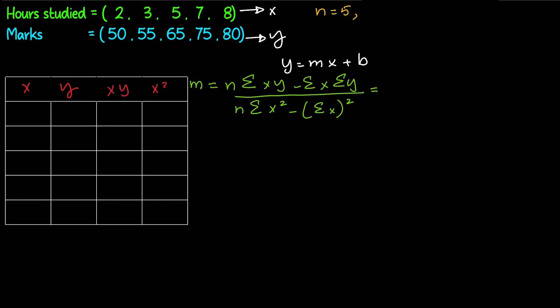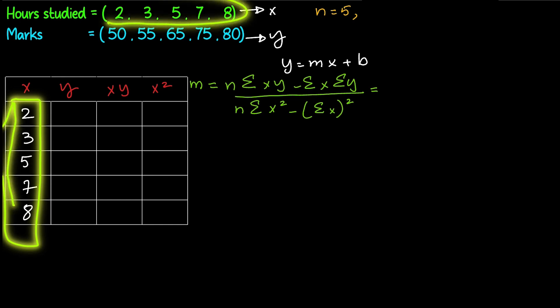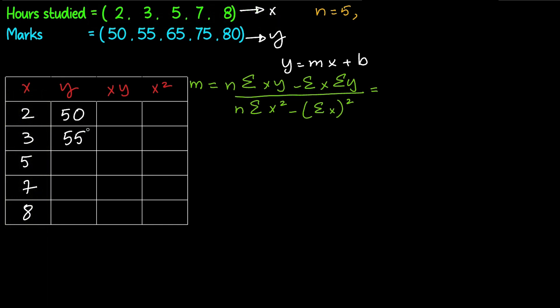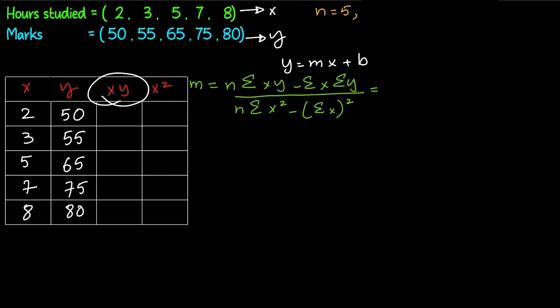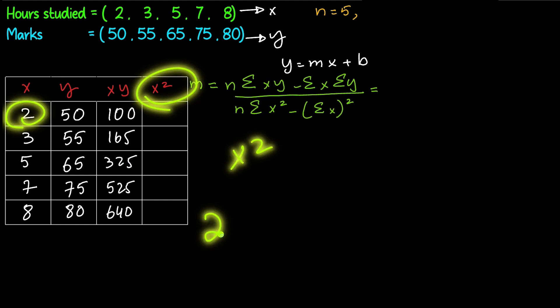First, we will write all the x or independent variable numbers, then y which is the dependent numbers, then multiply x by y and write all the numbers, similarly x squared.